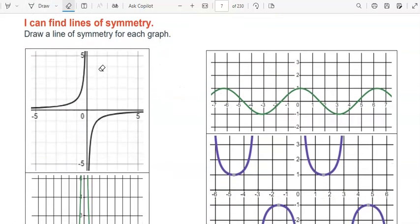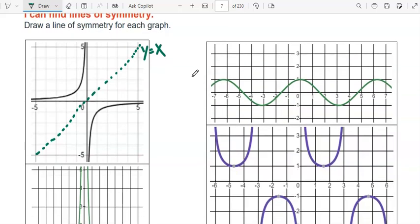Let's do some of these together. Draw a line of symmetry for each graph. This rational odd has a line of symmetry at y equals x. If you folded it over across this line, you would have the same shape on each side.